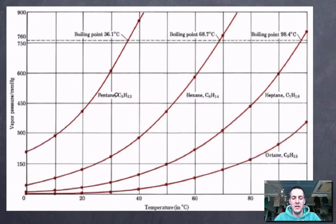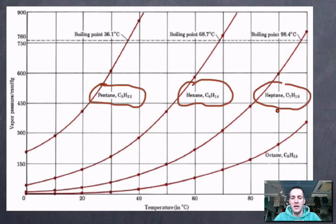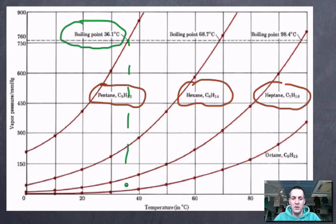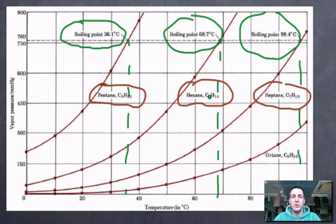Let's look at three liquids: pentane (C5H12), hexane, and heptane — and also octane. Atmospheric pressure is marked on the graph, and when the vapor pressure of these liquids reaches atmospheric pressure, that is when they boil. Their boiling points are the temperatures at which vapor pressure equals atmospheric pressure. Heptane has a higher boiling point than hexane, which has a higher boiling point than pentane.